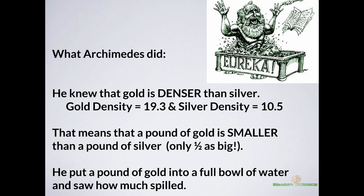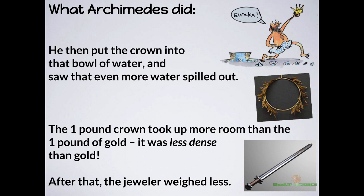Anyway, density. Gold is twice as dense as silver. So if there is silver mixed in with the crown, the volume of the crown will be more than the volume of a regular pound of gold. The way it goes is that Archimedes saved the day — the crown did, in fact, have silver mixed in, and the jeweler was trying to rip him off.